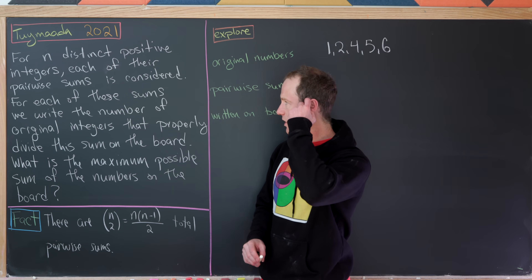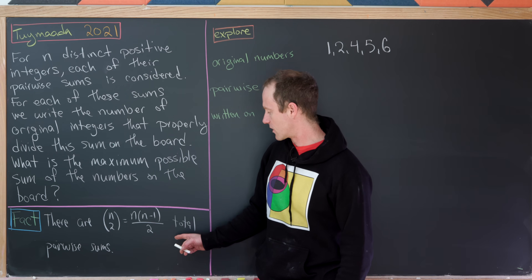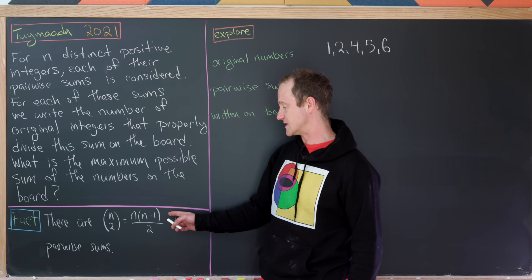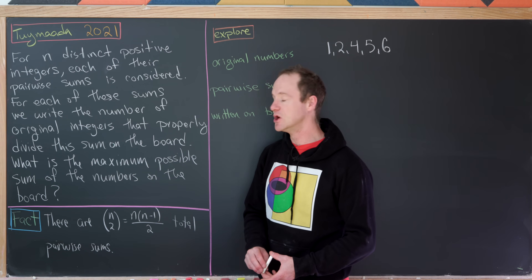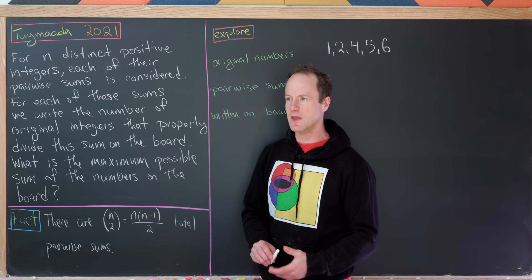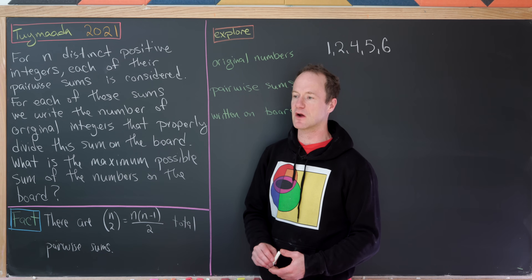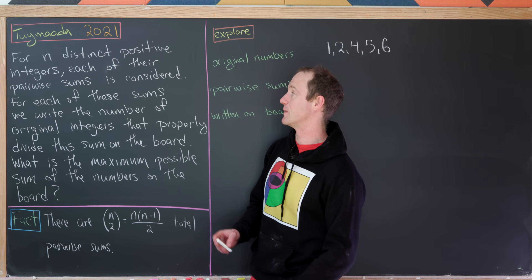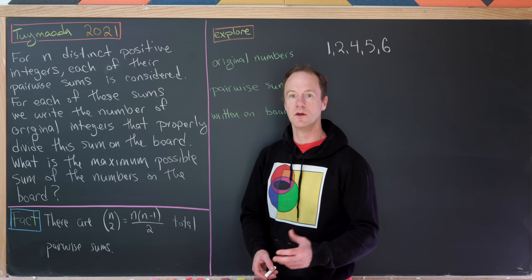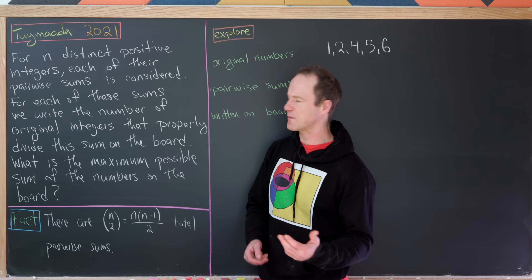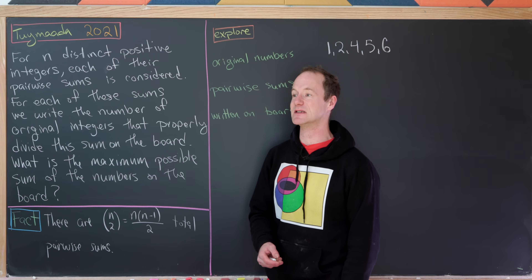There are exactly n choose 2 — in other words, n times n minus 1 over 2 — total pairwise sums. That's because creating one of these pairwise sums is equivalent to taking a 2-element set from an n-element set. Also notice that the pairwise sums need not be distinct; it's possible to have repeated pairwise sums.